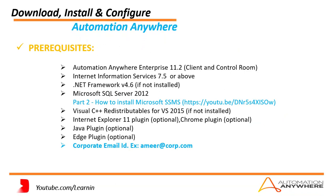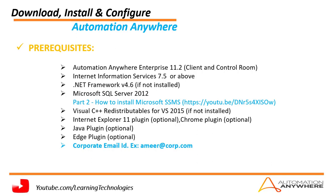First of all, we will see what are the prerequisites required to install Automation Anywhere Enterprise 11.2 version. If you see on my screen, we have the prerequisites here. The first one is Automation Anywhere Enterprise 11.2, which is the latest client and control room software that we require.